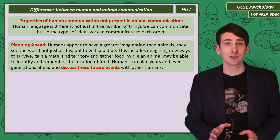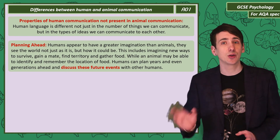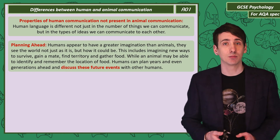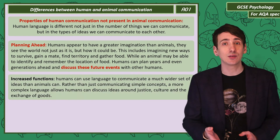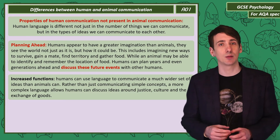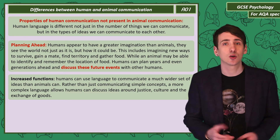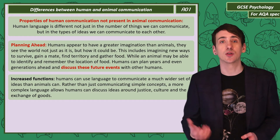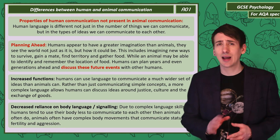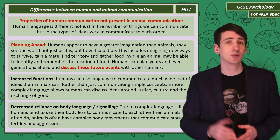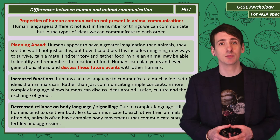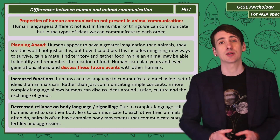This ability to plan ahead and discuss those plans with other humans allows us to predict future events and prepare for them. The complexity of human language also allows communication of abstract concepts such as justice, culture, and the exchange of goods for currency. Because of the complexity of human spoken language, we rely less on body language and other types of signalling. Many animals have much more complex body movements that communicate status, fertility, and aggression.